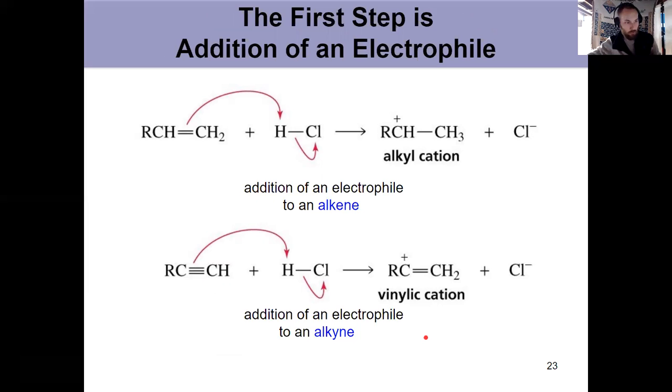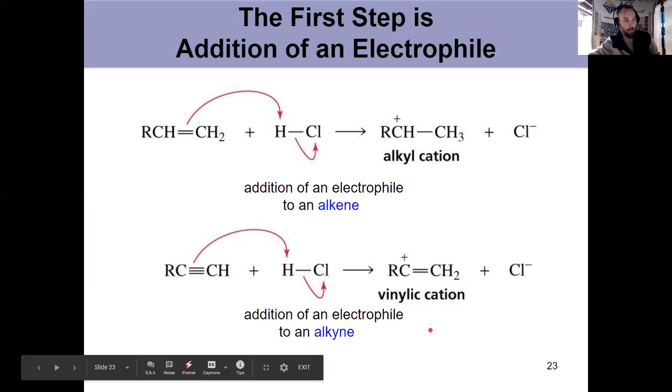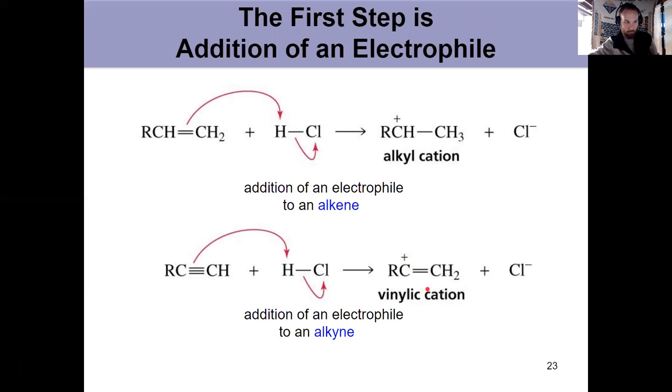This is a new term, make sure you're familiar with it. When I have a positive charge on a vinyl carbon, it's called a vinylic cation. A positive charge on either one of these would be a vinylic cation. Remember the term vinyl carbons from Chapter 5.